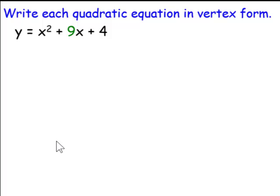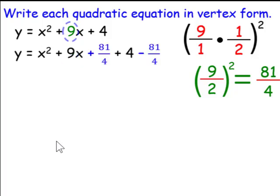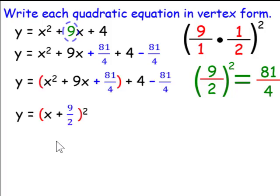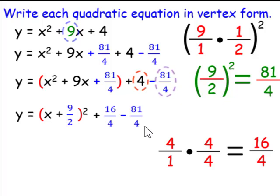Now in this case, since the b term is an odd number, it will work slightly differently. We will take half of 9 and square it, which will be 9 over 2 squared. 9 over 2 squared is 81 over 4. Therefore, we will add 81 over 4 and subtract 81 over 4. We have a perfect square trinomial. Its factored form is x plus 9 over 2 squared. On the right-hand side, we need to have the same denominator as 81 over 4, so we take 4 and multiply top and bottom by 4, giving us 16 over 4. So we rewrite this as plus 16 over 4 minus 81 over 4. 16 minus 81 is negative 65 over 4.